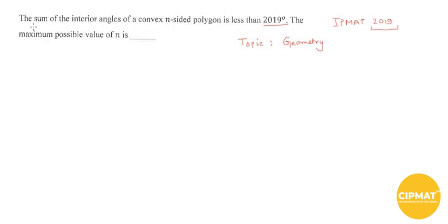So what is the formula for that? The sum of interior angles of an n-sided polygon is given by (n - 2) times 180 degrees. Now, according to this question, we have (n - 2) times 180 degrees to be less than 2019 degrees.